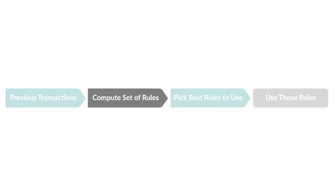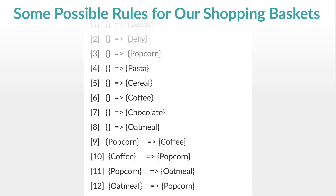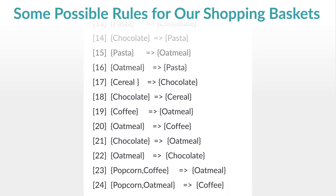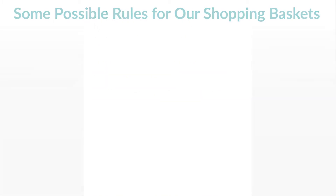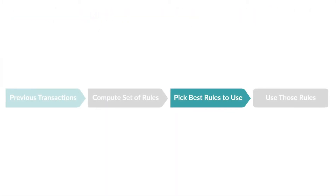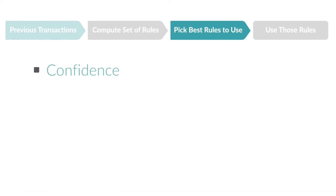So let's dive in a bit more on these associations. We're still on the compute set of rules part of our flowchart. As you can imagine, it's easy to generate a very large number of rules from your customer's transaction data. Here's a list of just a few rules our online grocery transactions can generate. Now we're going to focus on picking the best rules to use. How can we tell which ones are best? We use three measures: confidence, support, and lift.